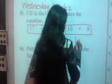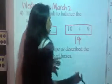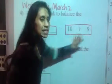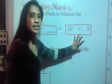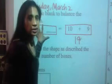19. So, 10 plus 9 is 19. So, if this side of the equation is 19, this side has to be what? 19.